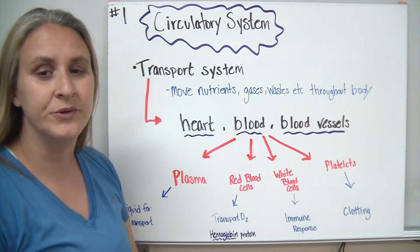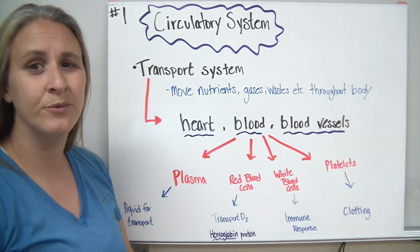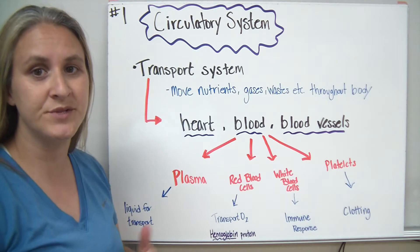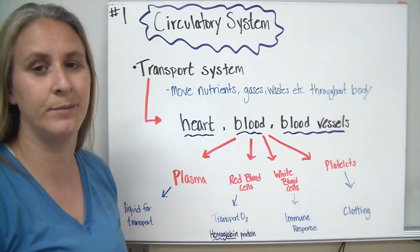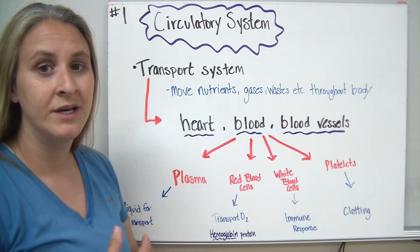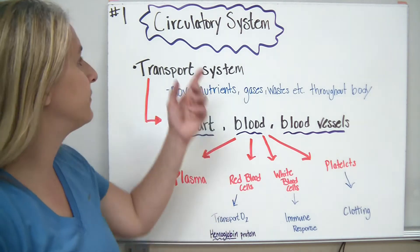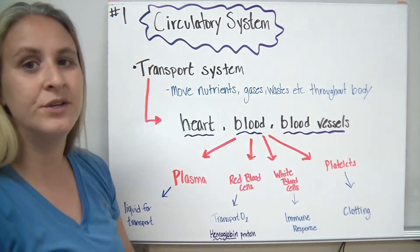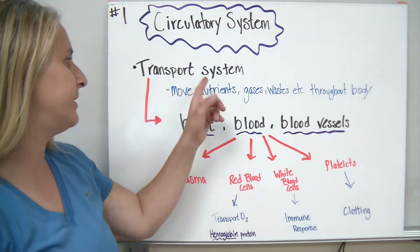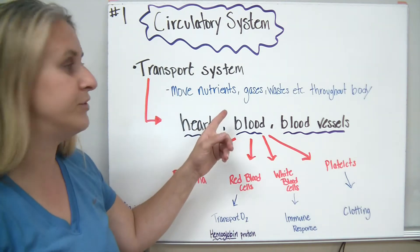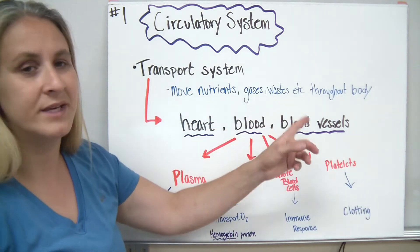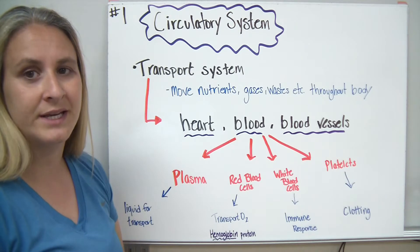Today we're going to talk about the circulatory system. We talked about how in individual cells things get transported through the cell membrane, but how do we transport things around a multicellular organism? In humans, we use a circulatory system. It is our main transport system in order to move nutrients, gases, wastes, and other materials throughout the body.